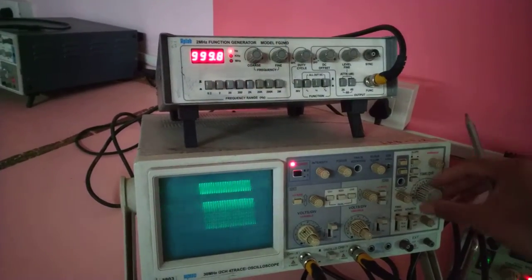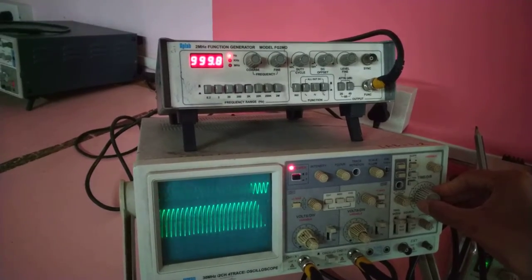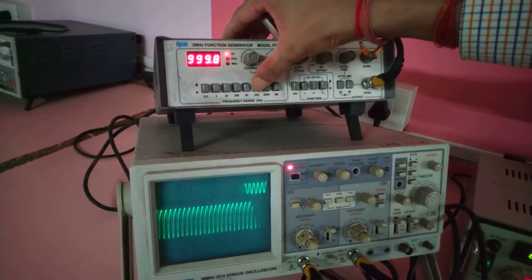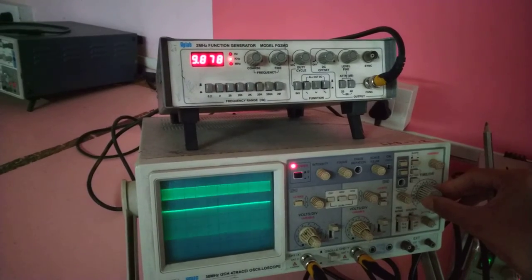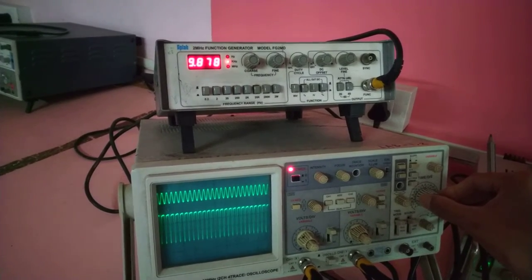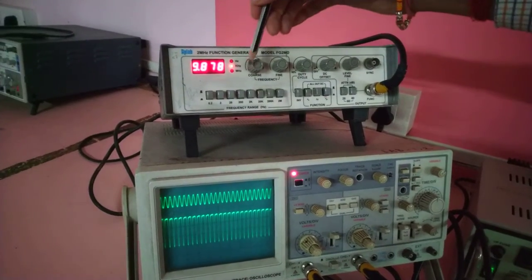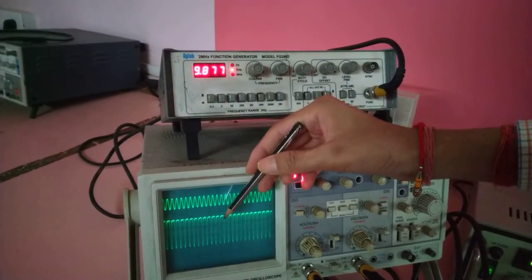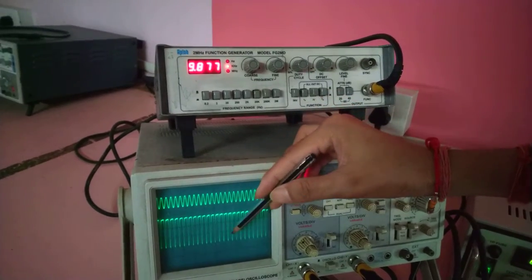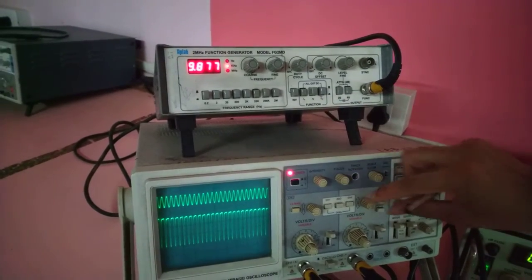Now moving on to the higher frequency side, this is approximately 1 kilohertz. Now this is at about 10 kilohertz, 9.8 that is near about 10 kilohertz. We are getting the frequency and output amplified version of the input.